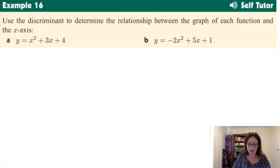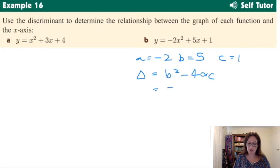And the second one, you write out using the discriminant. So you write out your coefficients, a is negative 2, b is 5 and c is 1. Write out the formula for the discriminant, b squared minus 4ac. Substitute in your numbers. 5 squared minus 4 times negative 2 times 1. And that comes out to be 33.